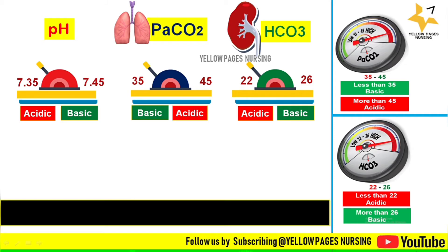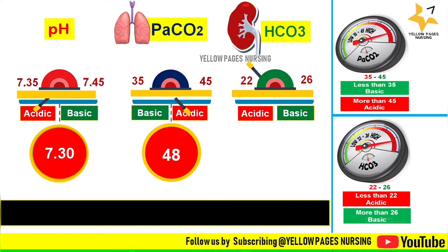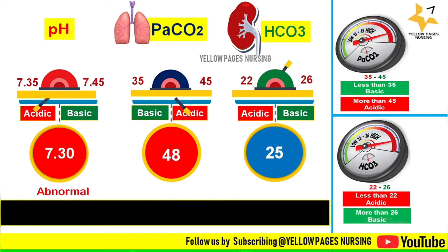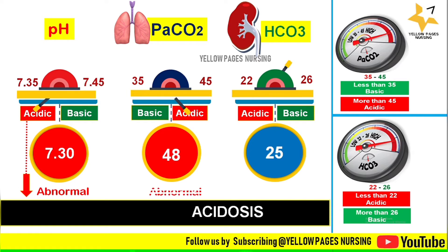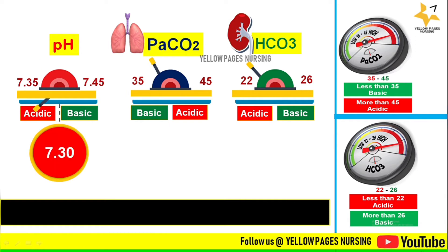First example: pH is 7.30, PaCO2 is 48, and bicarbonate is 25. The pH of 7.30 is below normal, indicating acidosis. PaCO2 of 48 is above normal, also indicating acidic. Bicarbonate of 25 is within normal range (22 to 26). Considering all values, we conclude this ABG is respiratory acidosis.